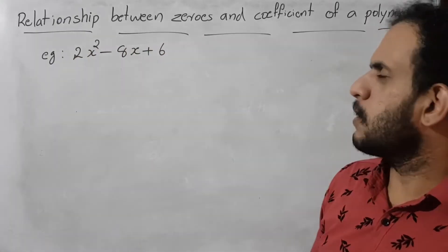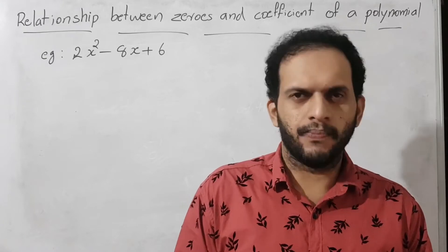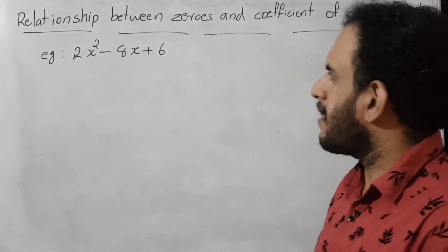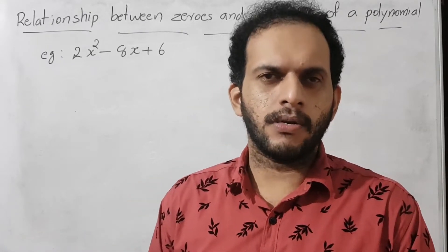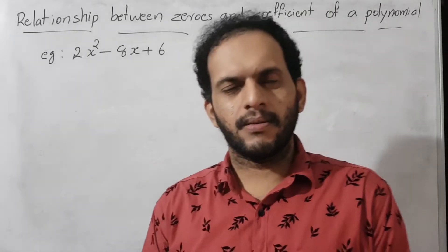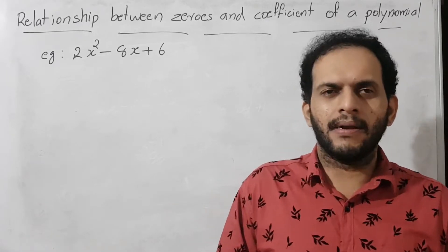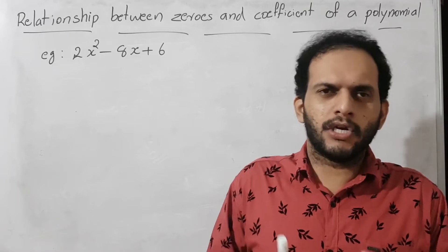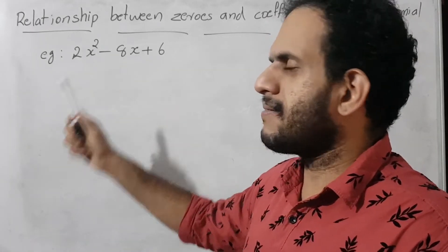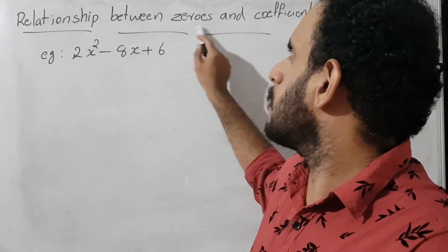The next part of the chapter is the relationship between zeros and coefficients of a polynomial. Here I wrote one example: 2x² minus 8x plus 6. The coefficients are: coefficient of x² is 2, coefficient of x is minus 8, and the constant is 6.